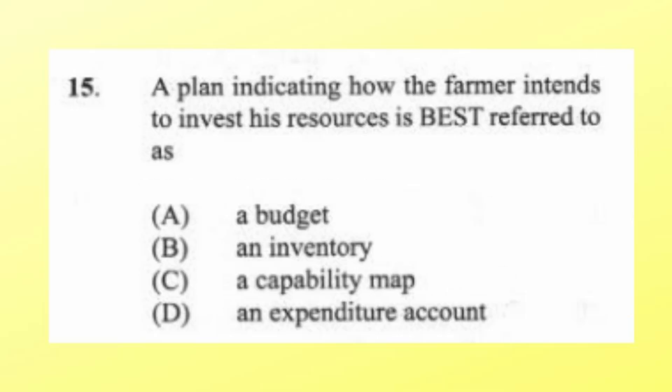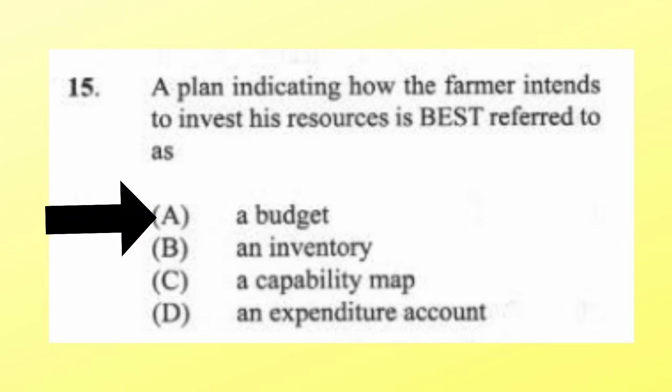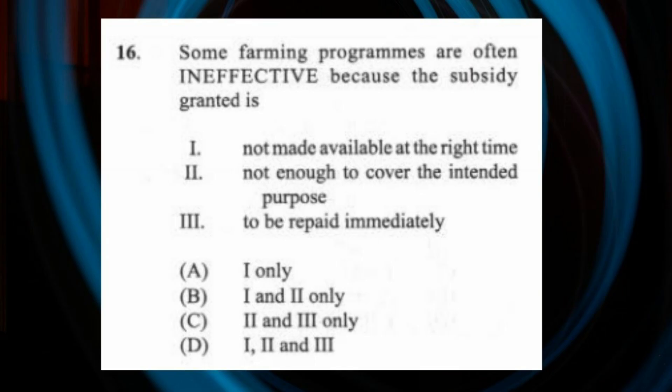Question 15: A plan indicating how the farmer intends to invest his resources is best referred to as (a) a budget, (b) an inventory, (c) a capability map, (d) an expenditure account. The answer is A, a budget. A budget is a financial plan comprising parts such as expenditure, income, and profit or loss.